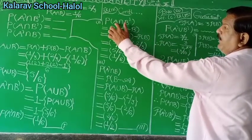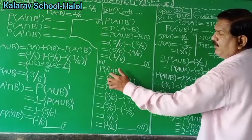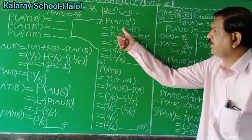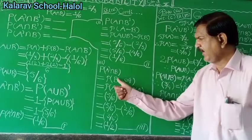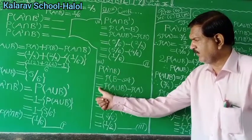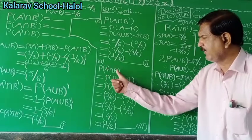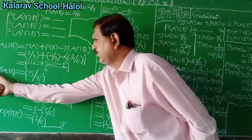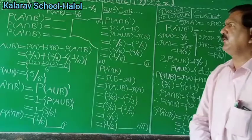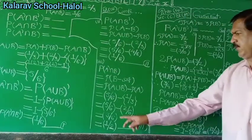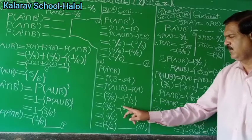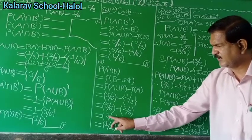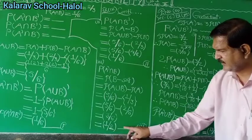For the third required probability, P(A complement intersection B) represents the probability of B occurring but not A — that is P(B minus A). This equals P(A union B) minus P(A): 5/6 minus 1/3. Taking LCM as 6: 5/6 minus 2/6 equals 3/6, which simplifies to 1/2. Answer number 3.